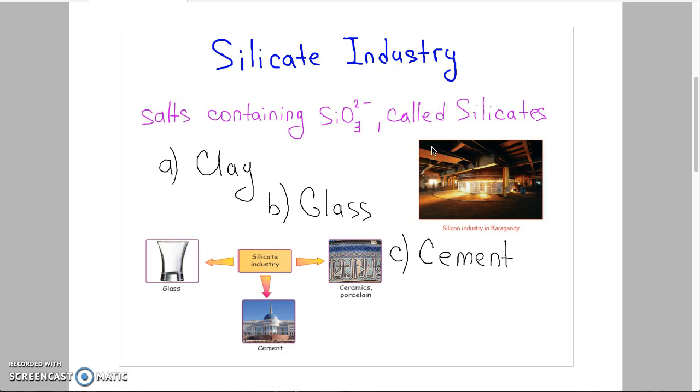The silicate industry is well-developed in Kazakhstan. Salts containing the anion SiO3²⁻ are called silicates. Here in the picture we can see a silicate factory in Karaganda producing solar cells.